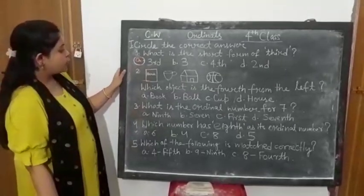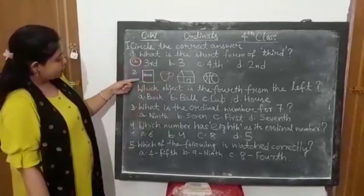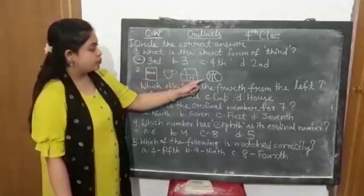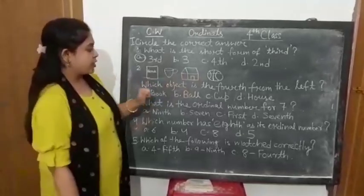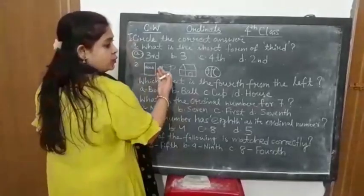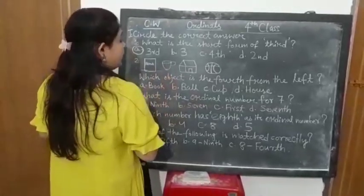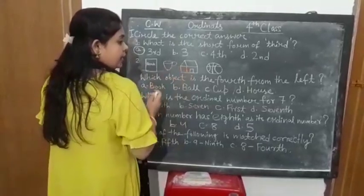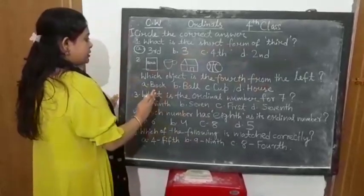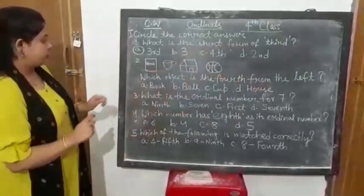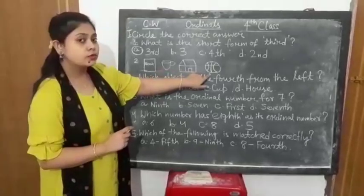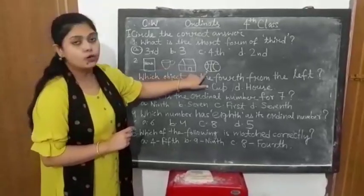See number 2. You can see 4 pictures - first one is a book, then cup, house, ball. Which object is the fourth from the left? When you are facing towards the blackboard, which is your left direction and which is your right. So from the left, you have to see which object is your fourth: 1, 2, 3, 4. This is first, second, third, fourth.